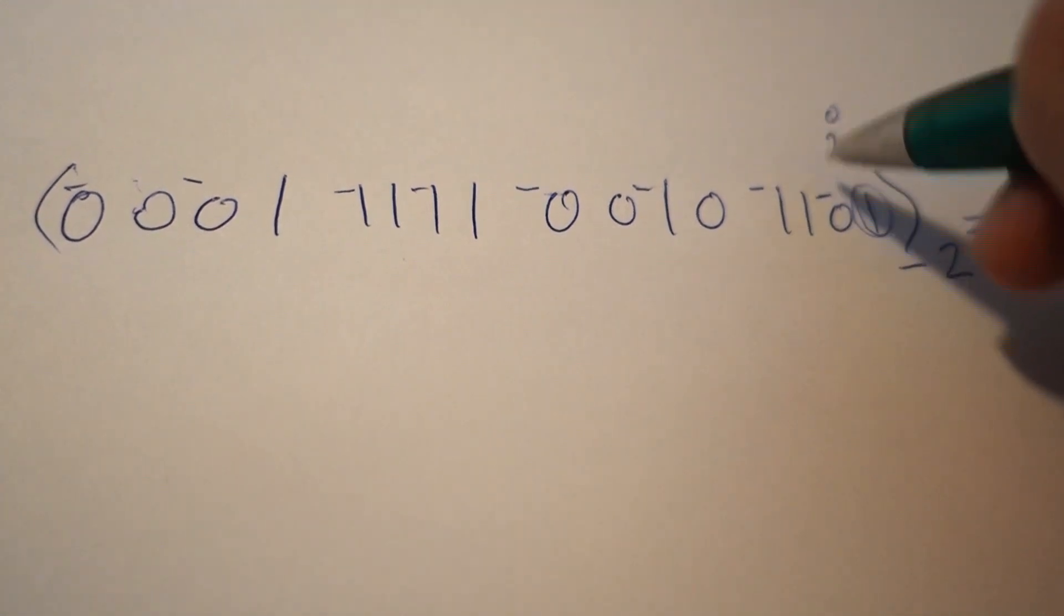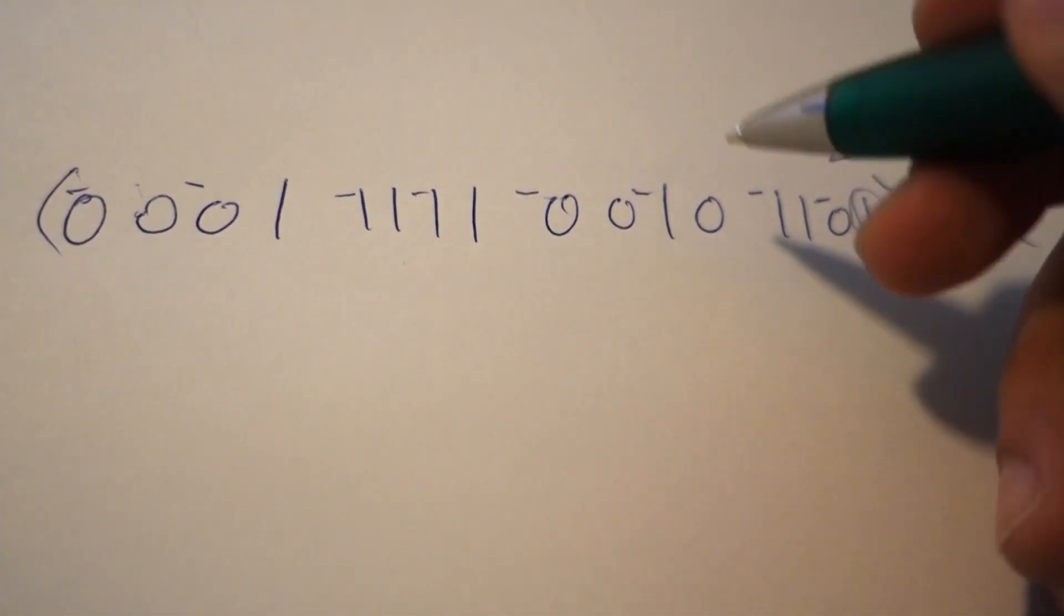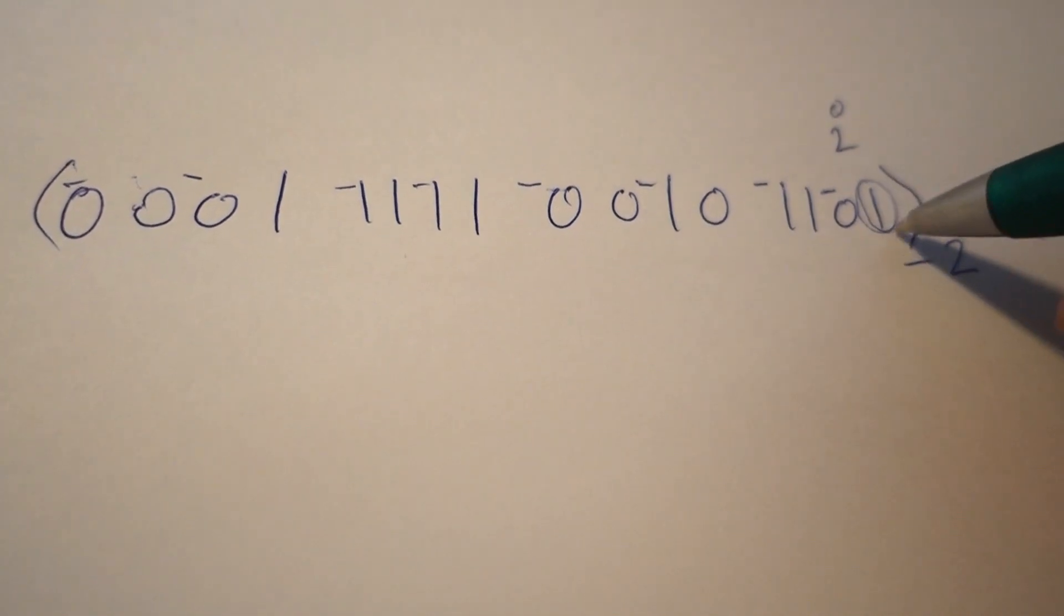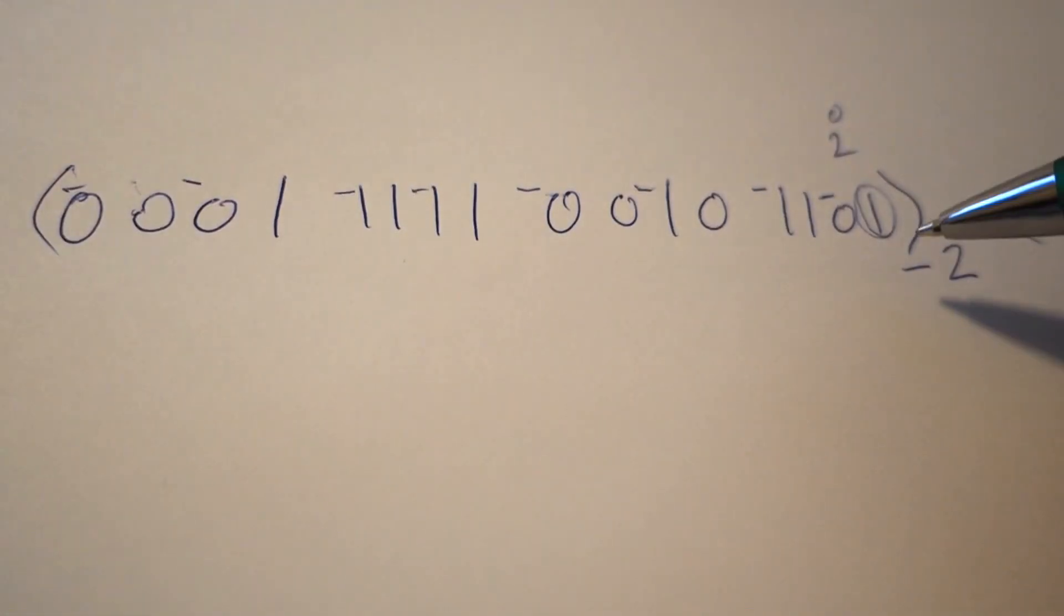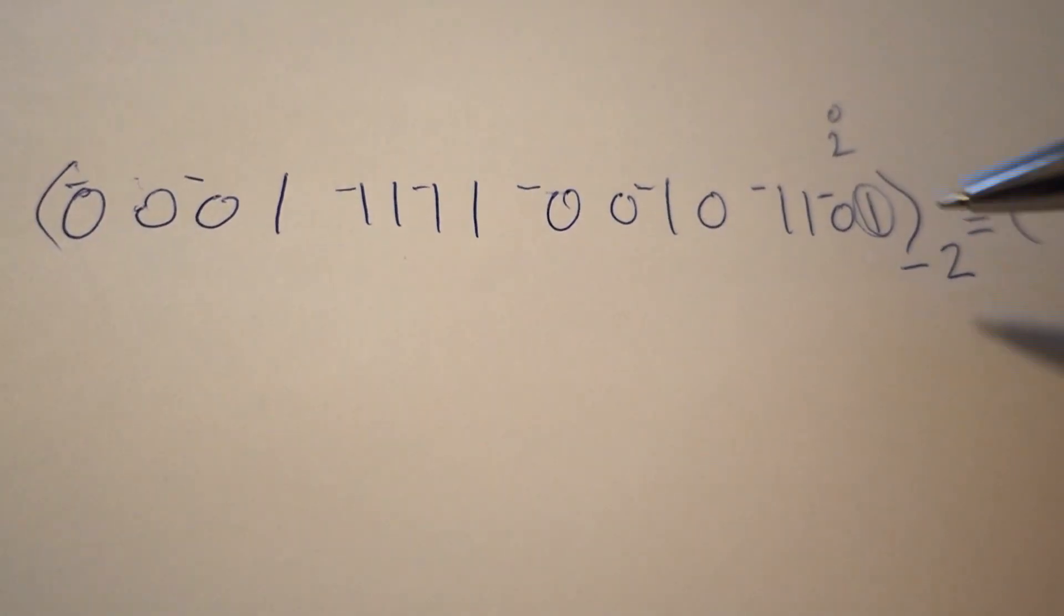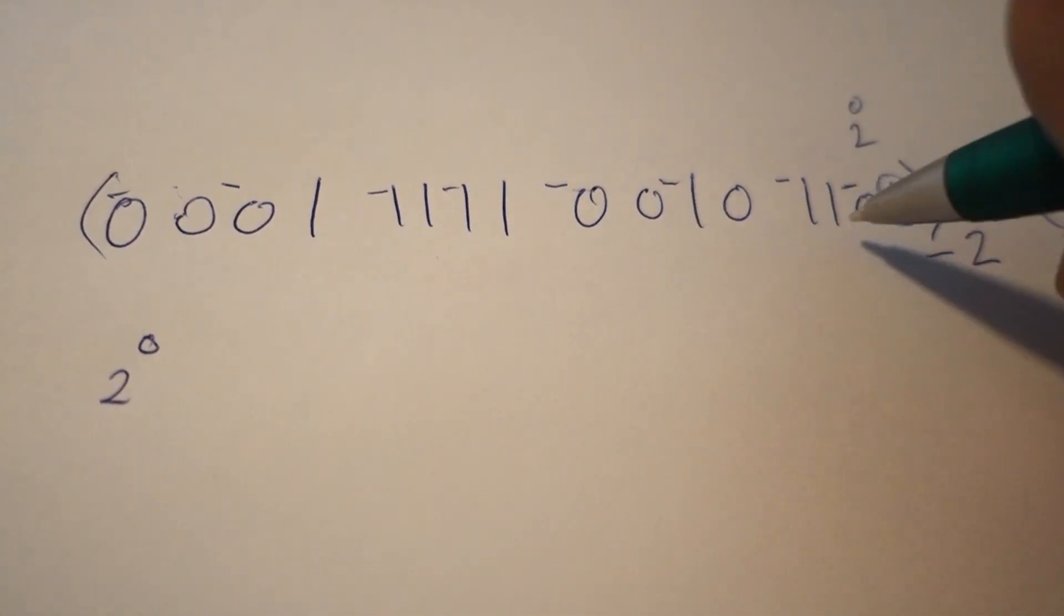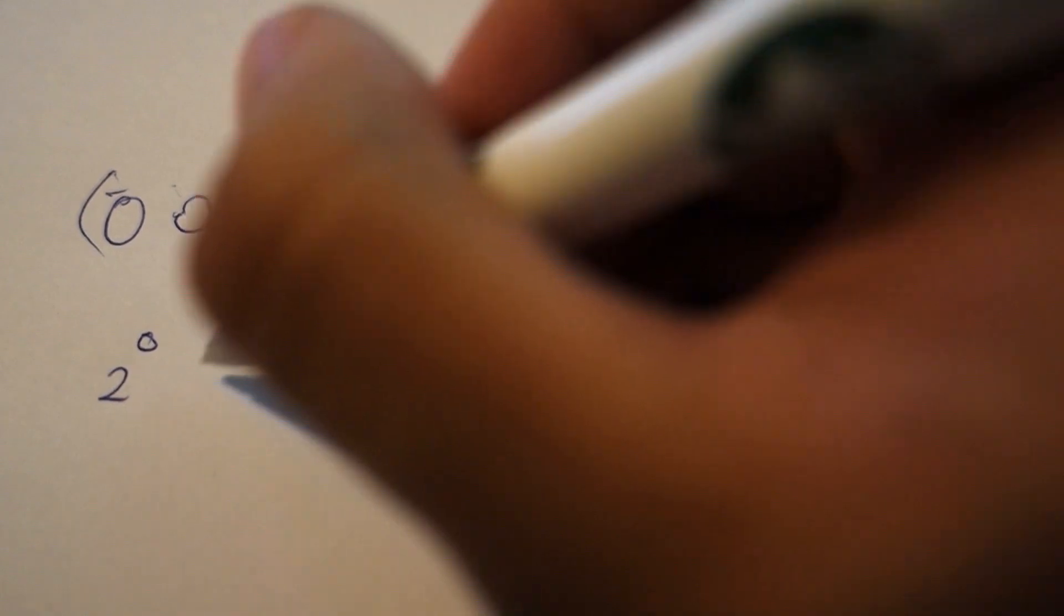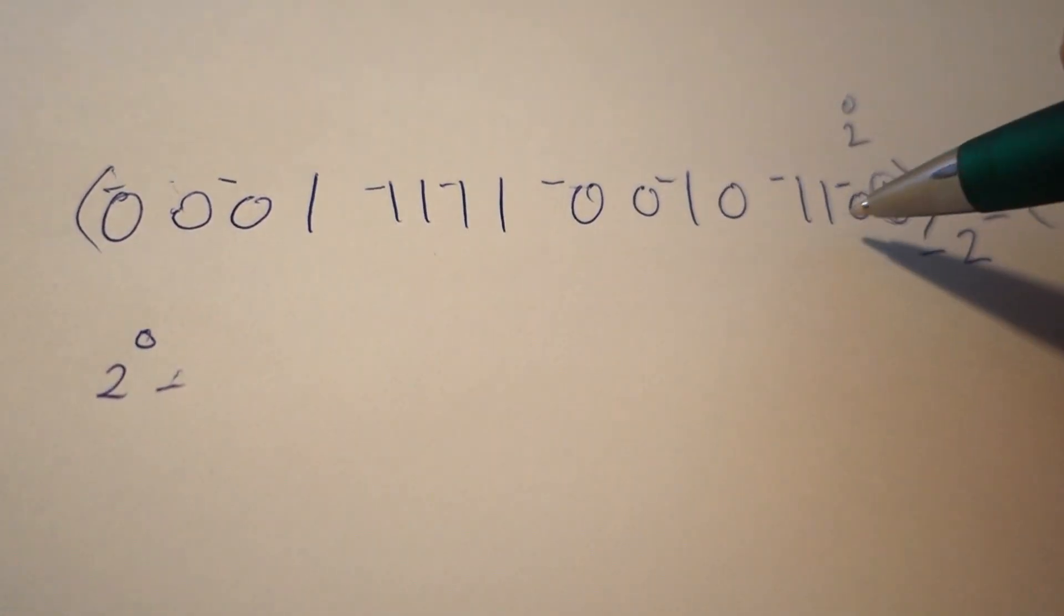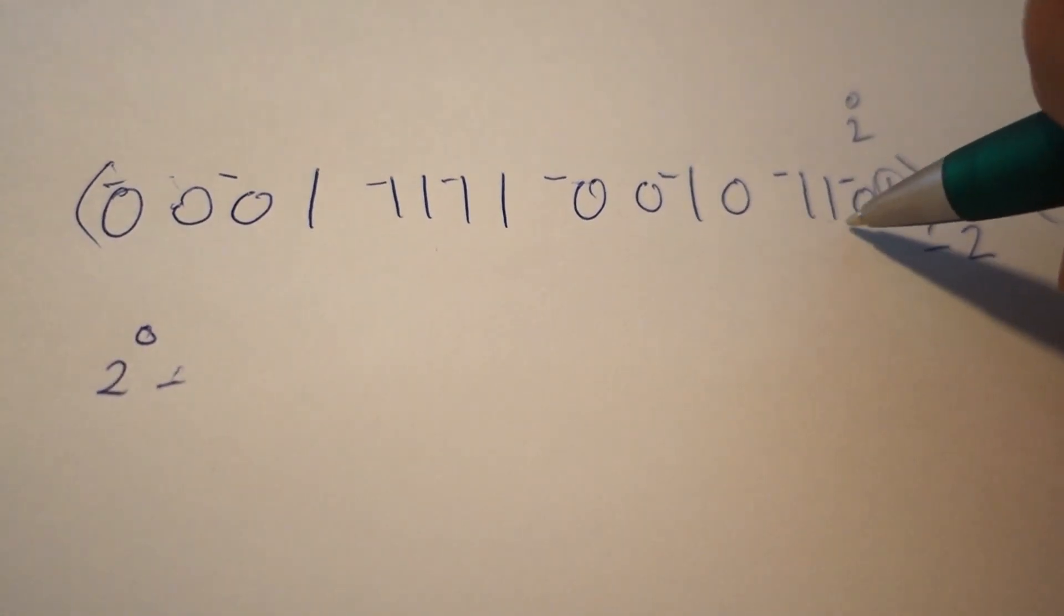So we go from least significant bit to most significant bit and add the values. This position is 2^0, and we have a 1, so we count 2^0. Here we have a 0, so we don't count anything. The second position is 2^1, then 2^2, then 2^3.